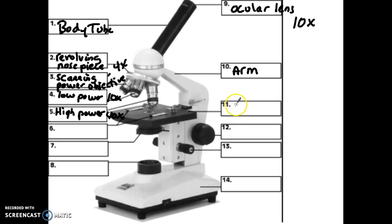Number 11, this is the stage. A stage is used, and I use the terms very specifically. This is more of a support mechanism. It supports the slide. It does not hold it. If the slide was on the stage and you tipped the microscope over, it would slide right off. That's not really a holding mechanism, but it supports it.